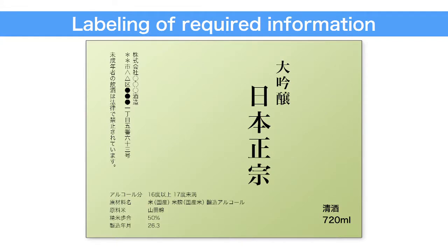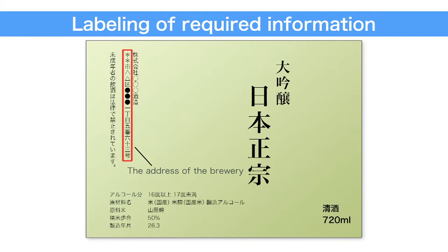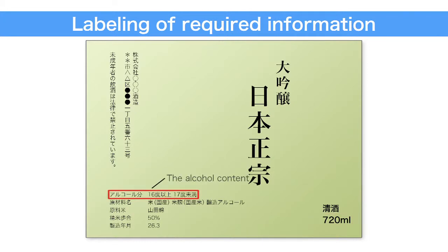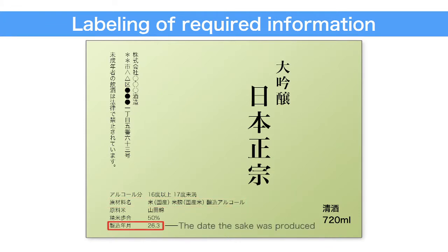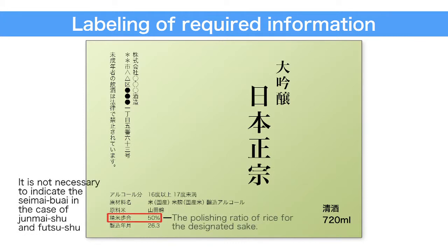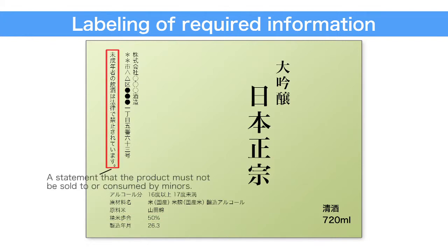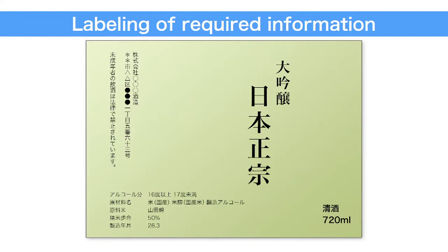These are some of the items that must be indicated on the label: the type of alcoholic beverage, the name of the brewery, the address of the brewery, the volume of the contents, the alcohol content, the raw ingredients, the date the sake was produced, the polishing ratio of rice for the designated sake, a statement that the product must not be sold to or consumed by minors, and in the case of namazake (unpasteurized sake), the label must include precautions relating to storage or consumption.